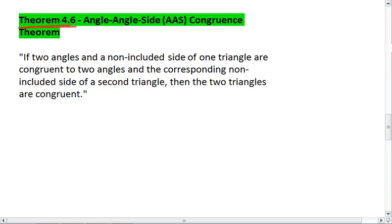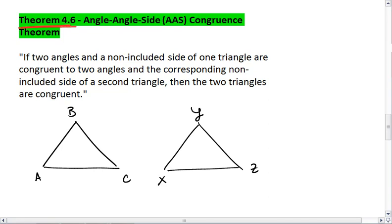What this theorem tells us is that if two angles and a non-included side of one triangle are congruent to two angles and the corresponding non-included side of a second triangle, then the two triangles are congruent.